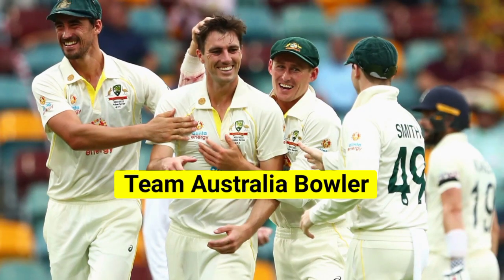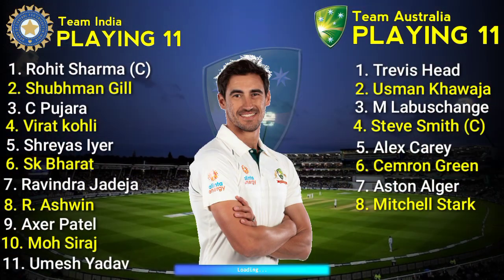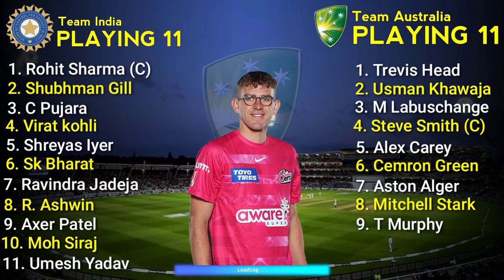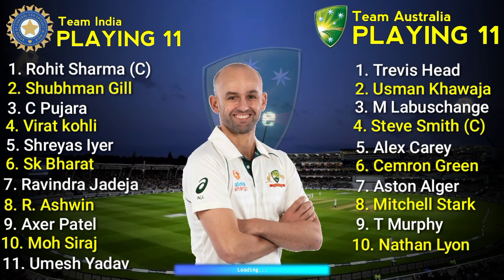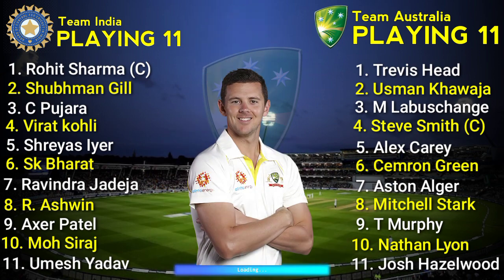Team Australia bowlers. Number 8: Mitchell Starc, left arm fast bowler. Number 9: Todd Murphy, right hand spinner. Number 10: Nathan Lyon, right hand spinner. Number 11: Josh Hazlewood, right hand fast bowler.